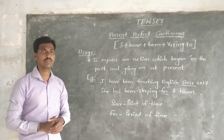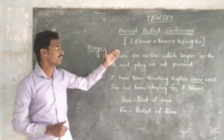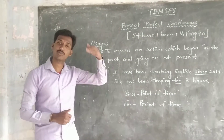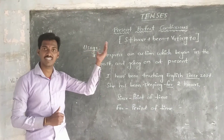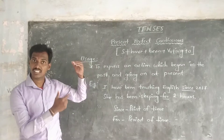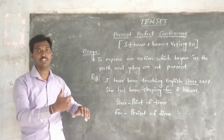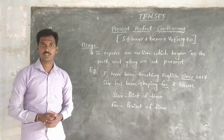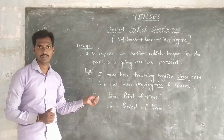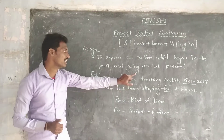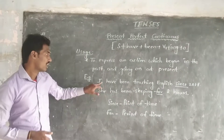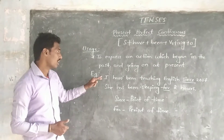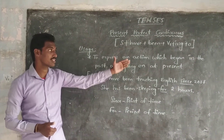So, why do we use Present Perfect Continuous? We use Present Perfect Continuous to express an action which began in the past and is still continuing. Here are a few examples.